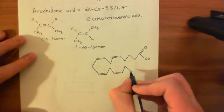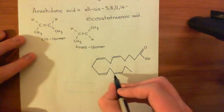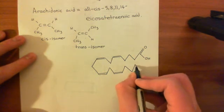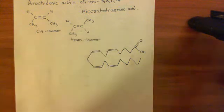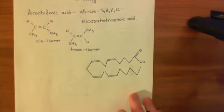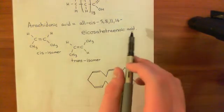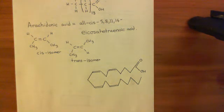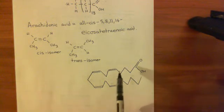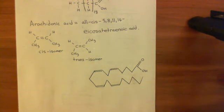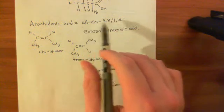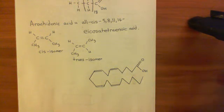Then fifteenth, sixteenth, seventeenth, eighteenth, nineteenth, twentieth carbon. There — that is the structure of all-cis-5,8,11,14-icosatetraenoic acid. If you just say 'icosatetraenoic acid,' that only tells you you've got a 20-carbon carboxylic acid with four double bonds — it does not tell you where they are. You can have icosatetraenoic acid molecules where the double bonds are not in those same positions. So it's ambiguous. You do need to say all-cis-5,8,11,14-icosatetraenoic acid.